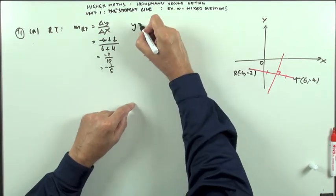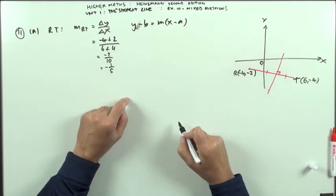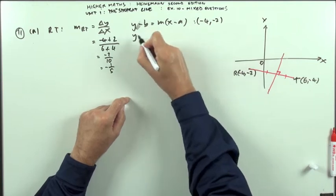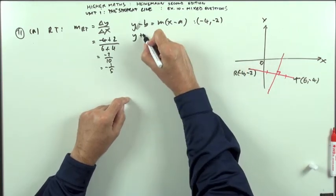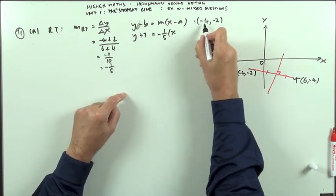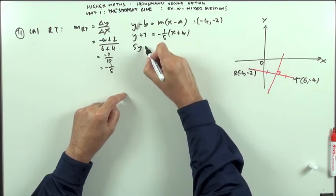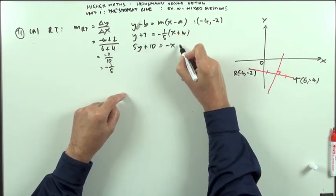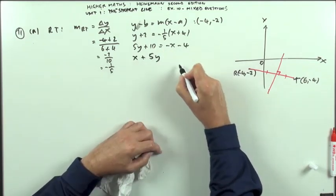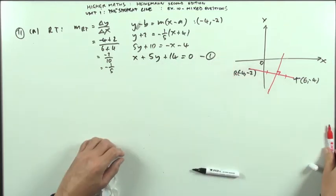And then for the equation of the line, I've got Y minus B is MX minus A. Which point will I choose? I'll use the negative 4, negative 2. So Y, take away the Y coordinate with Y plus 2, negative 1 fifth of X, take away the X coordinate, so I'll be plus 4. Take the 5 across. 5Y plus 10, leave the negative on this side, negative X minus 4. So I've got X plus 5Y, bring that across, plus 14 equals 0. So I'll put that down to this equation.